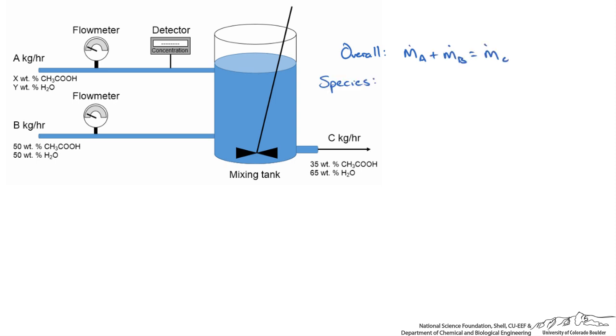Then we do a species balance for acetic acid. We do not know the composition coming in, so I will call this x weight percent of acetic acid times mass flow rate of A. It is important to make sure the units add up, so when using weight percent to use it appropriately.